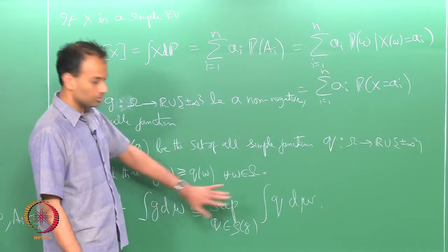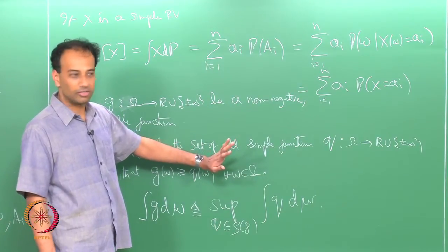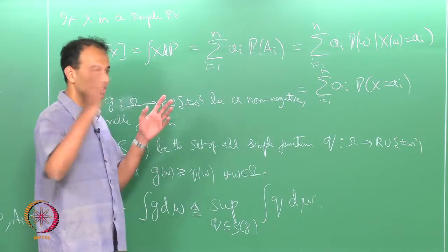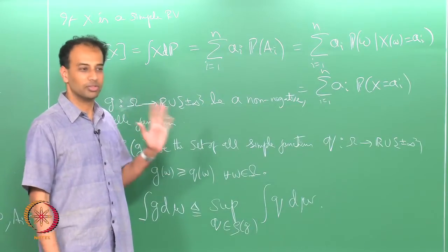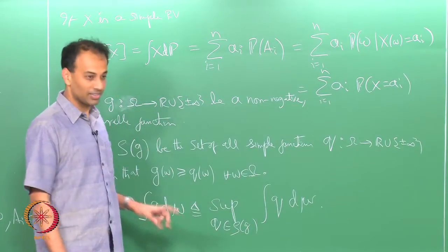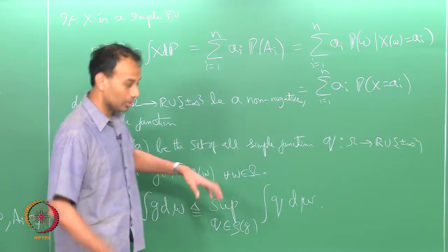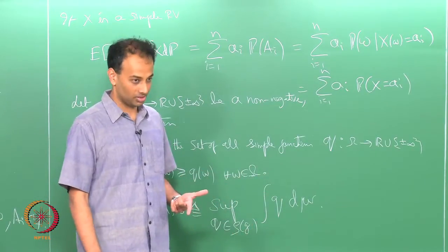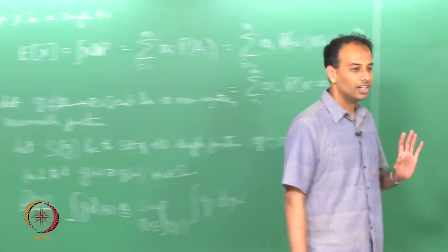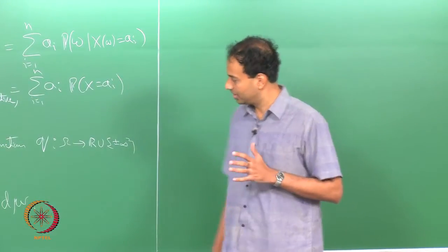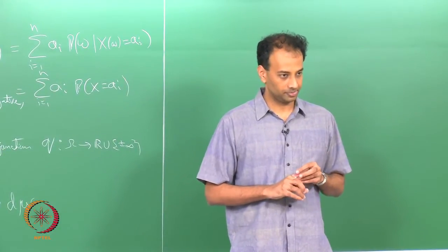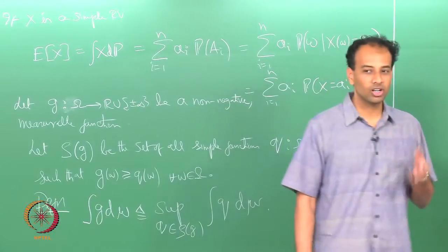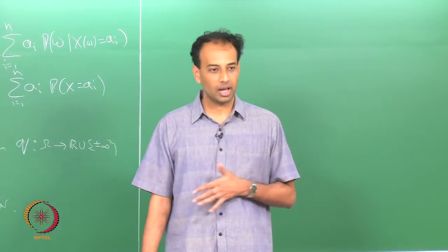This is mathematically perfectly well defined, but on the other hand it is very difficult to use in practice. If I give some function like g of x equals x squared, you have to hunt for all simple functions which are less than or equal to that function, evaluate those integrals, and find the supremum — that may be an uncountable collection of functions. So it is not a practically useful definition, but it is nevertheless a definition that helps us prove a number of properties about integrals. We will later see that this will lead to a more practically useful definition of the abstract integral as well.